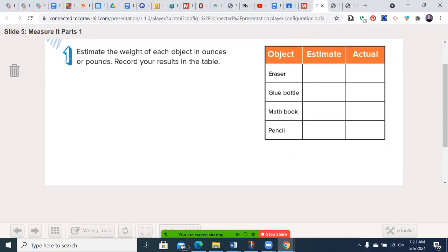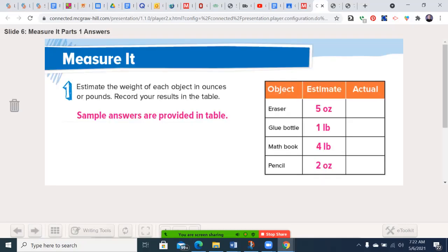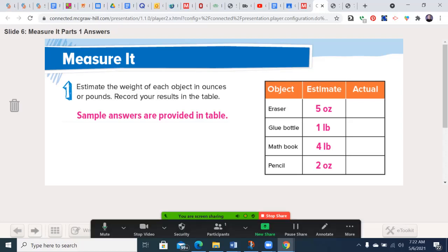If we have the available resource to weigh these, you could get the actual weight, but I'm more interested in the estimates today. Guessing five ounces versus one pound versus four pounds is relatively subjective. Go ahead and write those in. I'll give you a few seconds here.